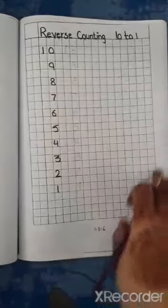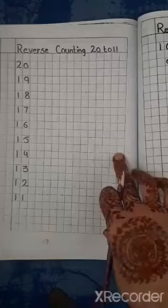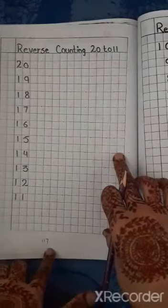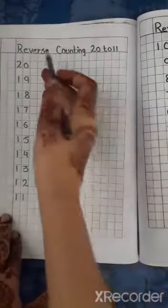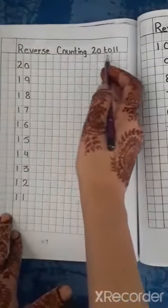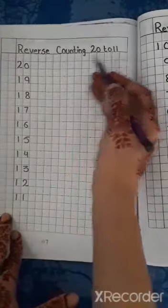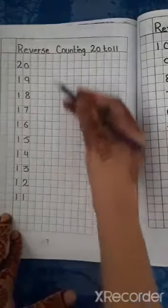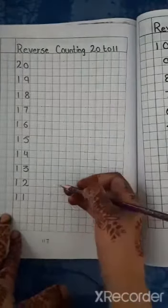Now do the rest of page as your homework. Open page number 117. Reverse counting from 20 to 11. अब हम 20 to 11 तक reverse counting लिखेंगे. उल्टे गिंती.